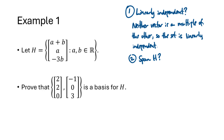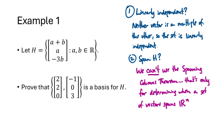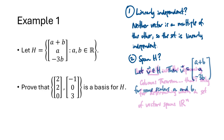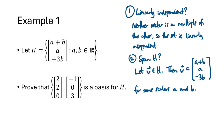Now, why do these two vectors span H? We can't use the spanning columns theorem here, because that tells us about when vectors span R^n — or in this case R^3. We're not asking whether these vectors span all of R^3; we're asking whether they span this subspace. So we go back to the definition: these two vectors span H means any vector in H can be written as a linear combination of these two vectors. So let V be a vector in H.